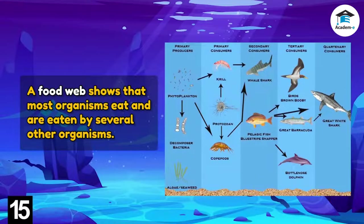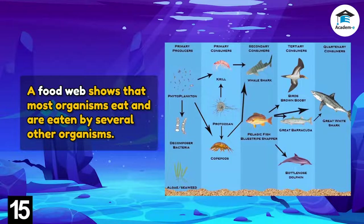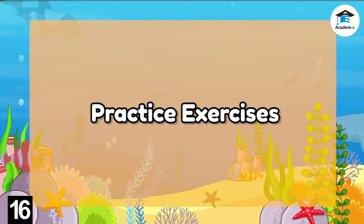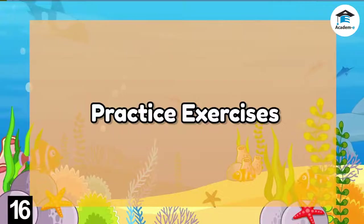A food web shows that most organisms eat and are eaten by several other organisms. Estuary and intertidal food webs differ from other ecosystems because the primary producers are not consumed by herbivores — most organic materials enter the food web as detritus. An animal that feeds on detritus is called a detritivore.